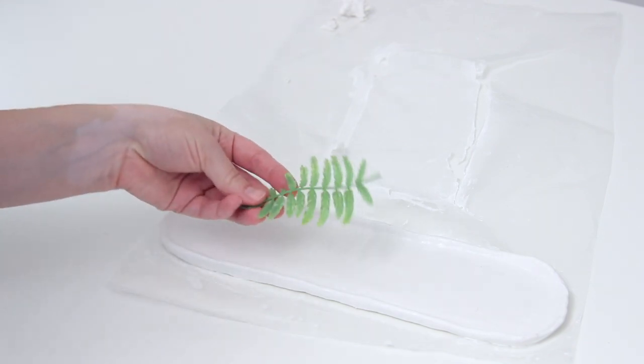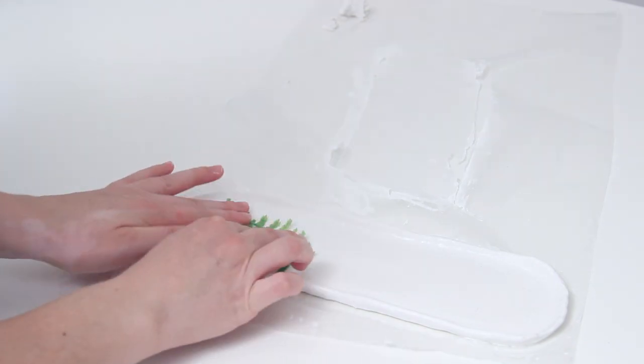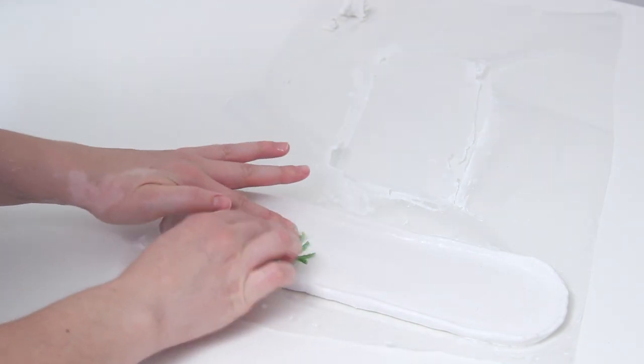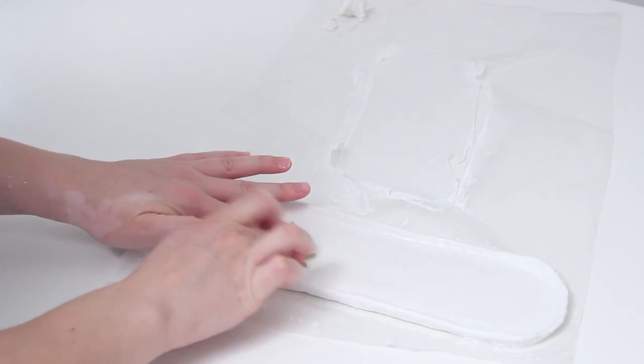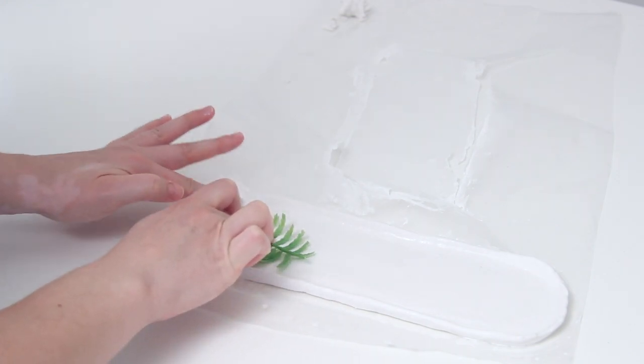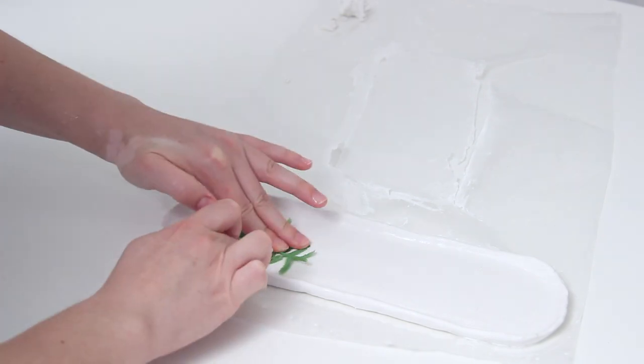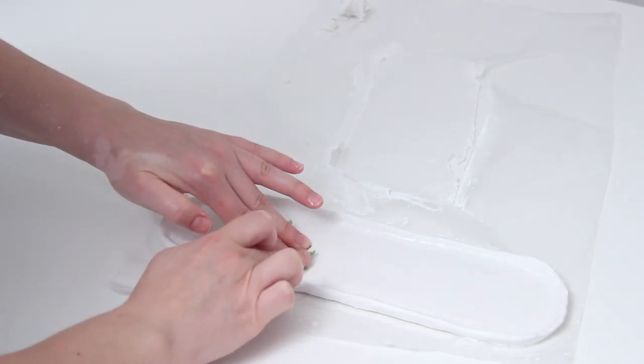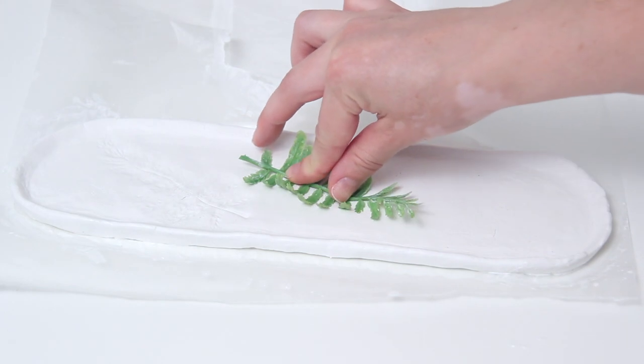Now I'm taking this little fake leaf and I'm just pressing it right into the top of the clay. And the harder you press, obviously the bigger of an indent you'll have. I kind of wish I did press a little bit harder, but I was not sure how it was going to turn out. So I just did my best and you'll see the imprint in your clay.